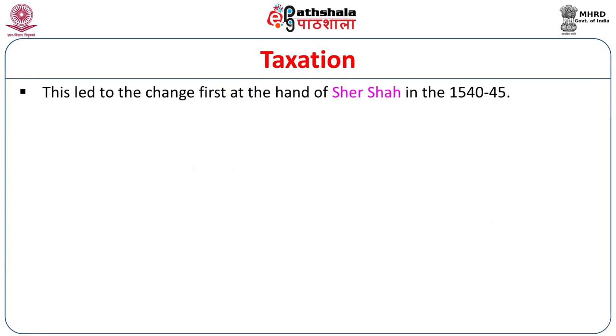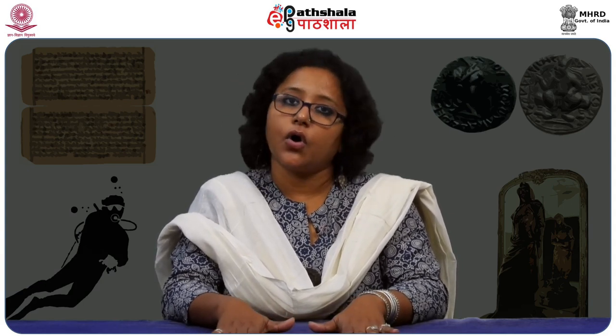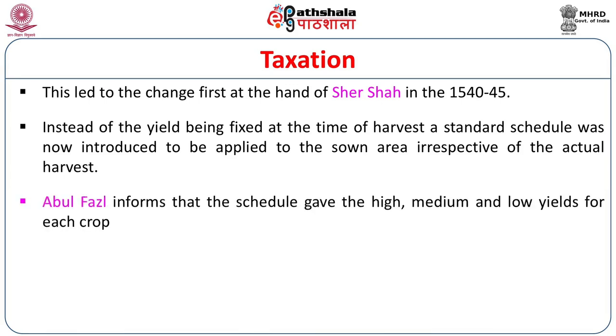This led to the first change in the hands of Shershah in 1540–45. Before the Mughals started their tax system, a tax system prevailed which was to some extent modified by Shershah in certain parts of North India. Instead of the yield being fixed at the time of harvest, a standard schedule was now introduced to be applied to the sown area irrespective of the actual harvest. Abul Fazl informs that the schedule gave the high, medium, and low yields of each crop so the state could fix the rate accordingly.